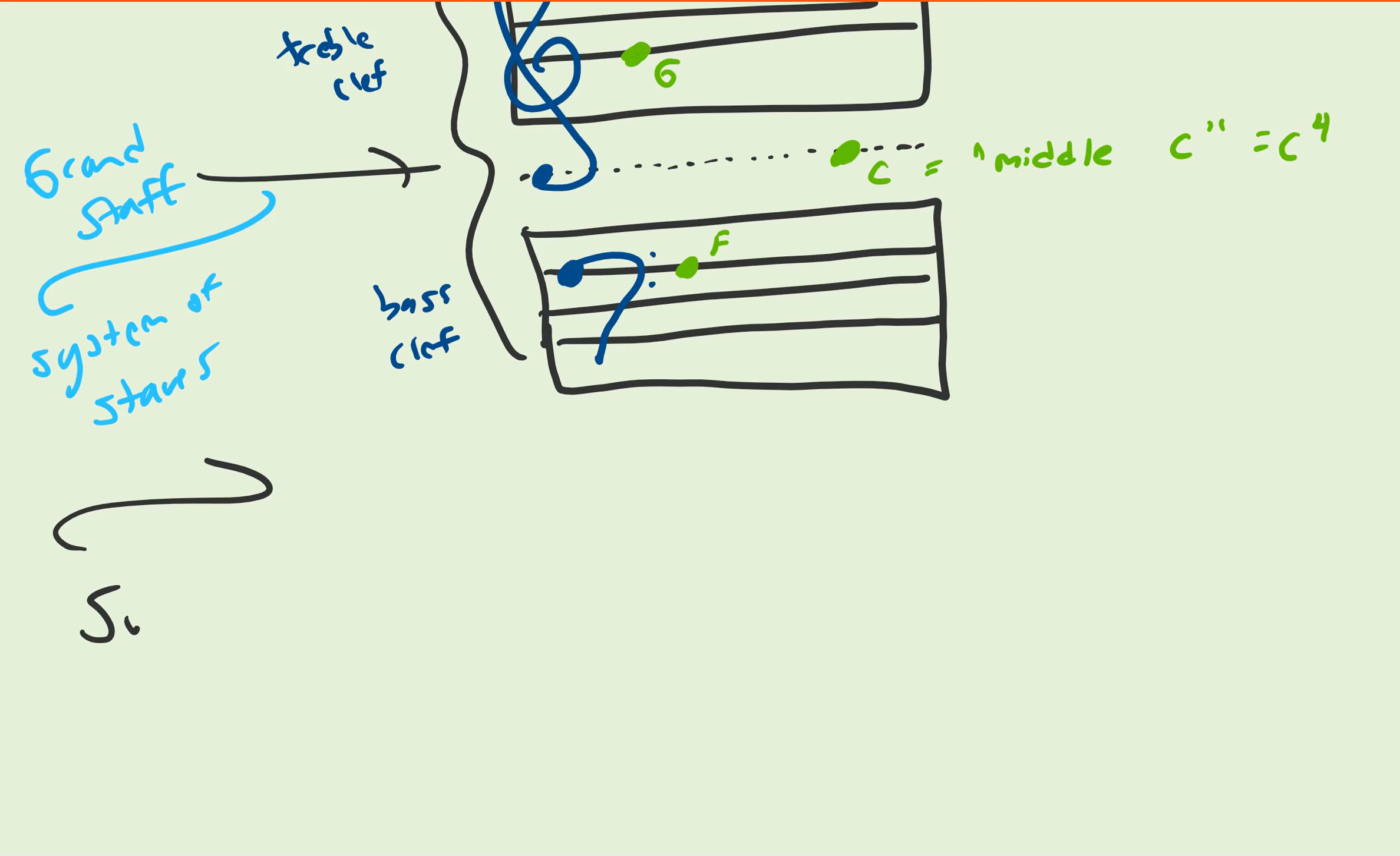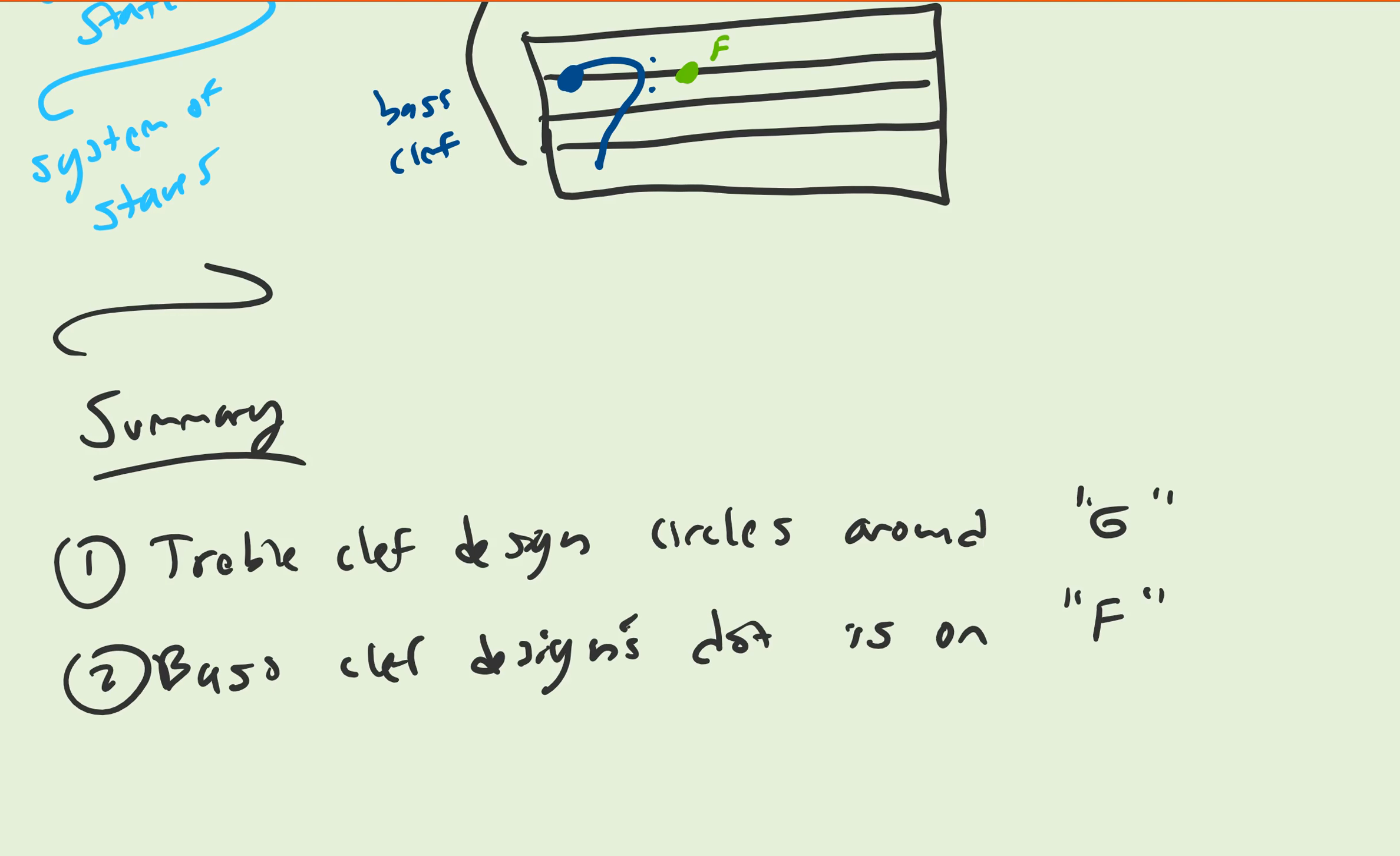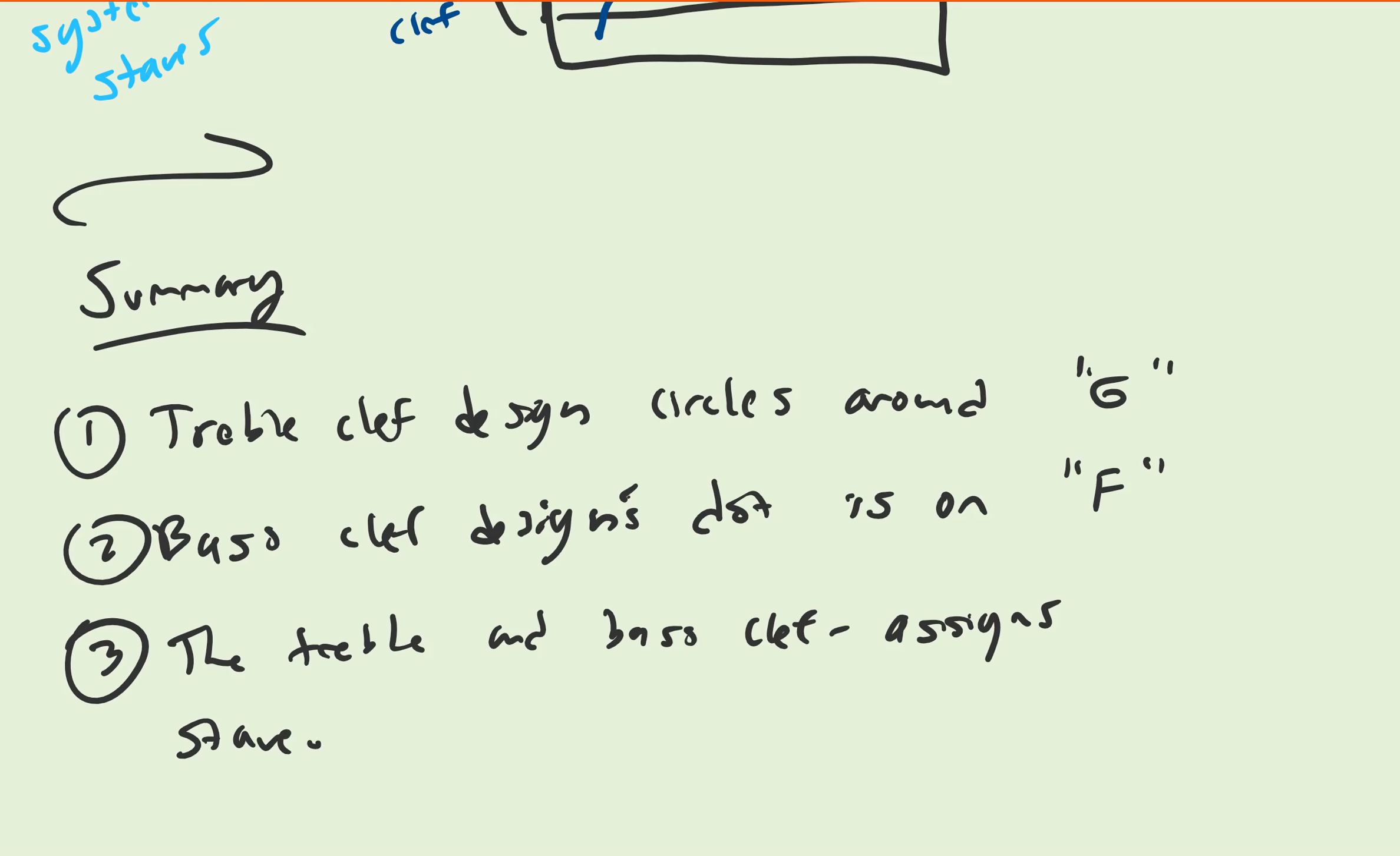To summarize these basic concepts, let me outline them for you. The first, the treble clef design circles around G. The bass clef design dot is on F. The treble and bass clef assigned staves are typically arranged with treble on top, bass on bottom.